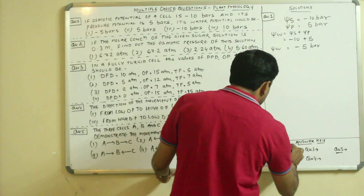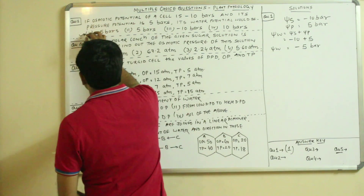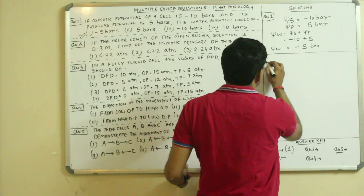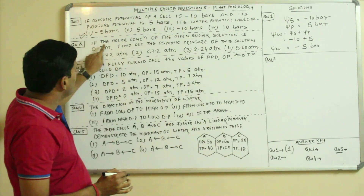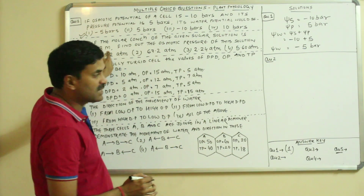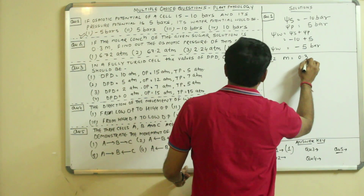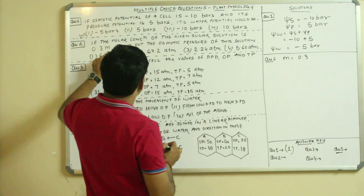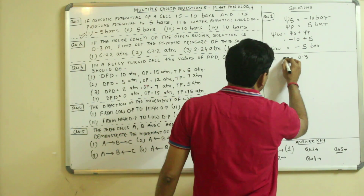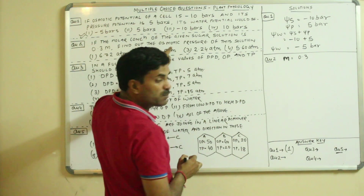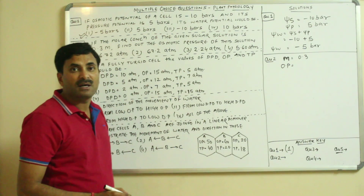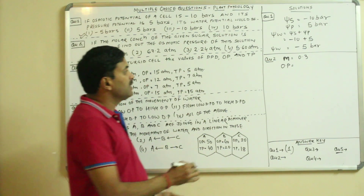Now question number 2: if the molar concentration of a given sugar solution is 0.3 M, find the osmotic pressure of the solution. To find osmotic pressure, we use the van't Hoff formula: OP = MRT.